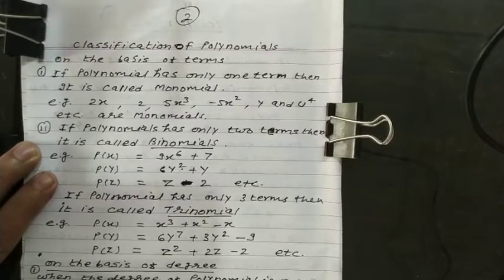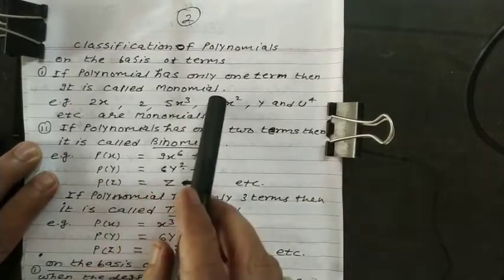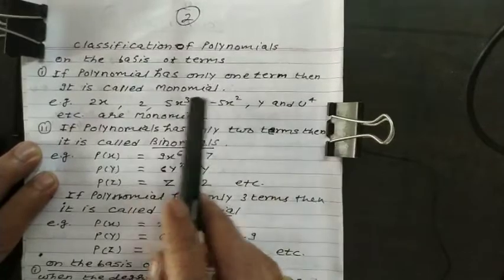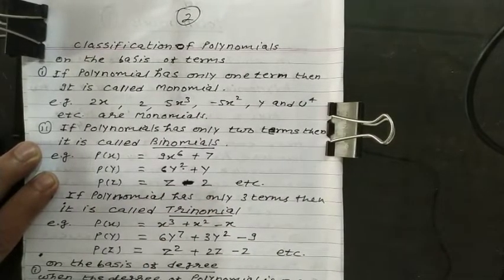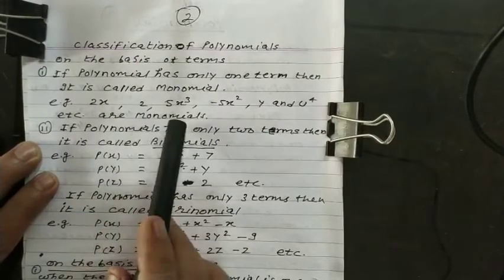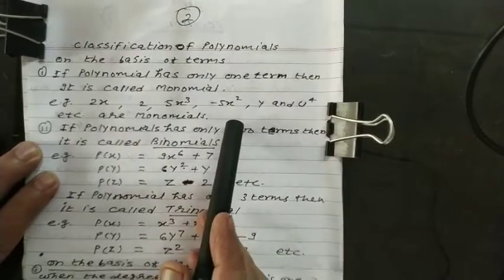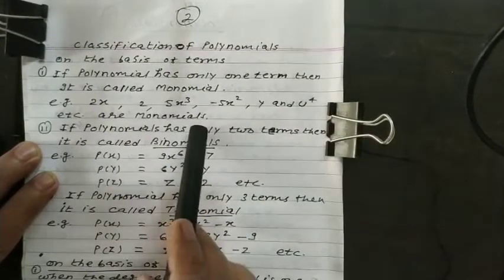First, we see classification on the basis of terms. If a polynomial has only one term, it is called monomial. Mono means one. For example, 2x, 2, 5x³, -5x², y, and u⁴, etc., are all monomials.